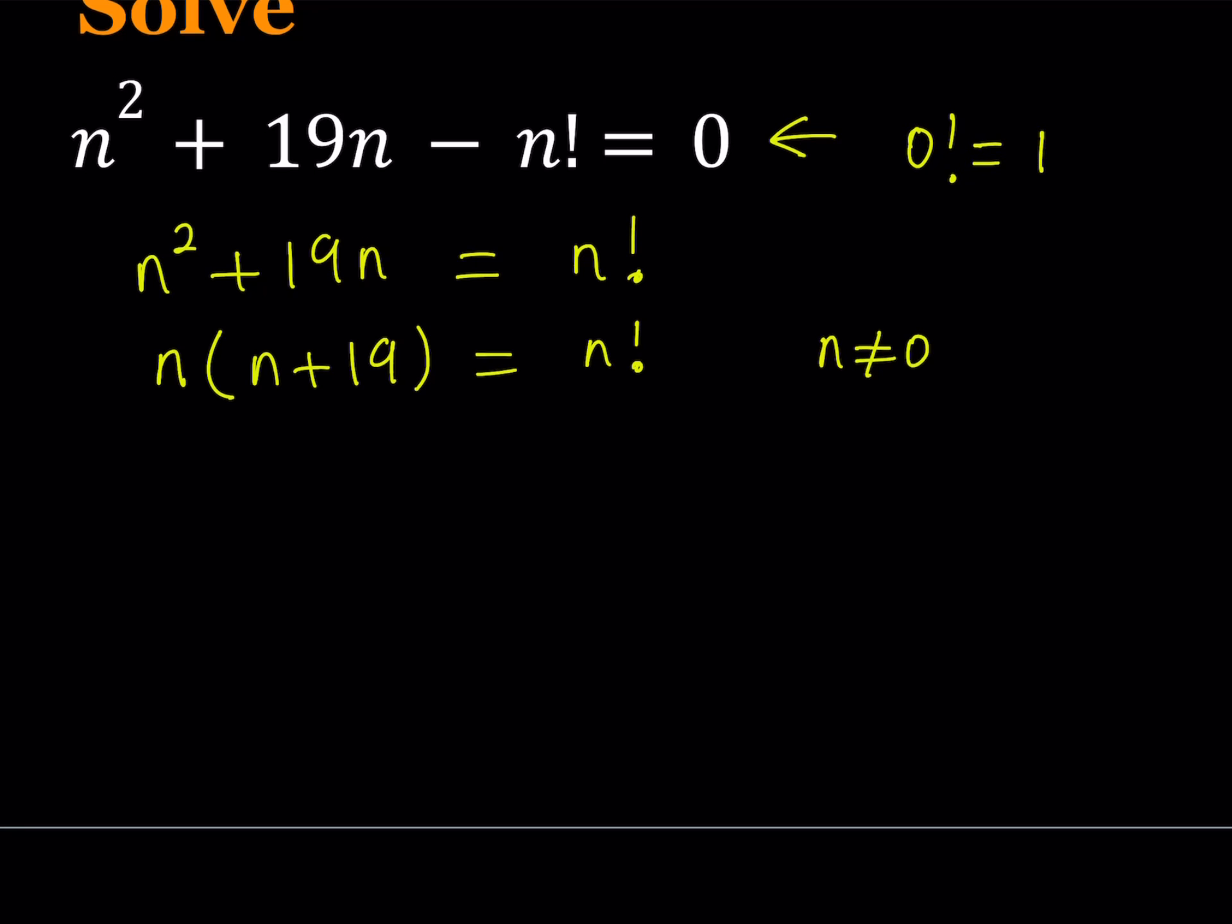So having said that, we can divide both sides. But let's write the right-hand side so that it contains n. I can write n factorial as n times n minus 1 factorial.